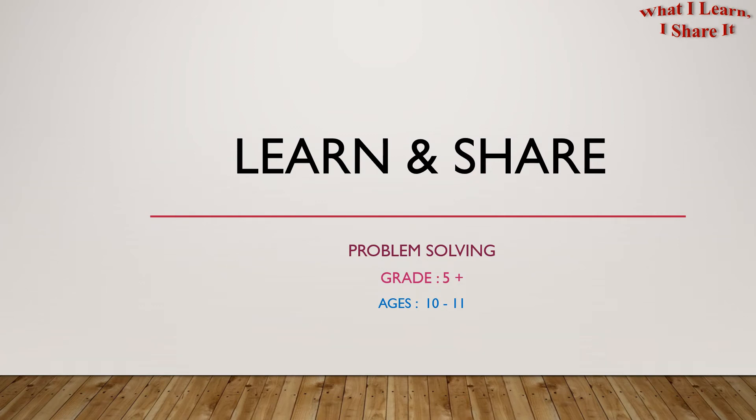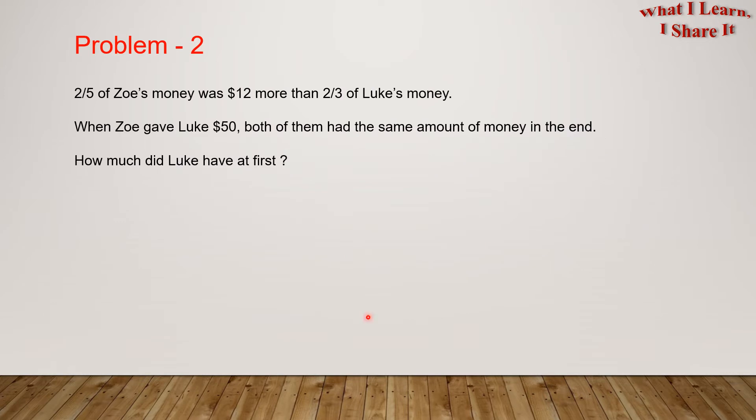Hello, everyone! Welcome to Learn and Share. We're doing problem solving for grades 5 plus and ages 10 to 11. Problem 2. Two-fifths of Zoe's money was $12 more than two-thirds of Luke's money. When Zoe gave Luke $50, both of them had the same amount of money in the end. How much did Luke have at first? Do you want to try it yourself? Feel free to pause the video and try it yourself. Do you want to see how I solved it? I solved it in a step-by-step way. Let's see it.